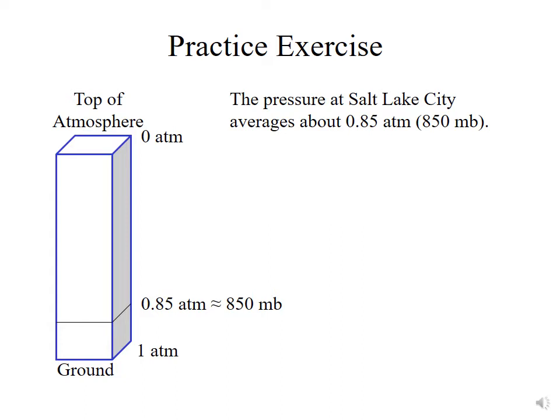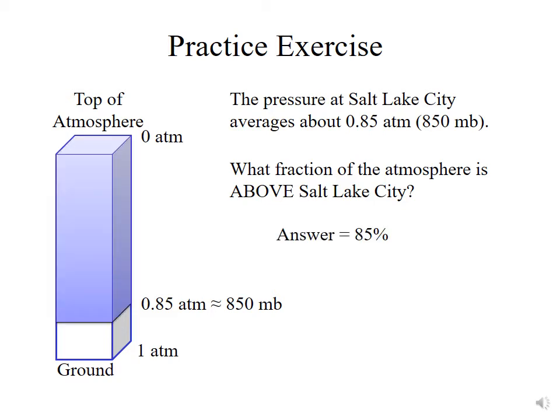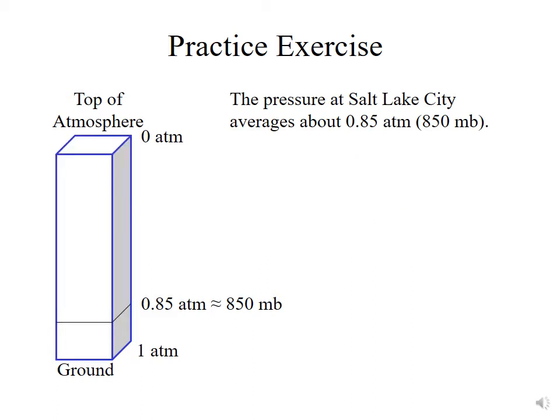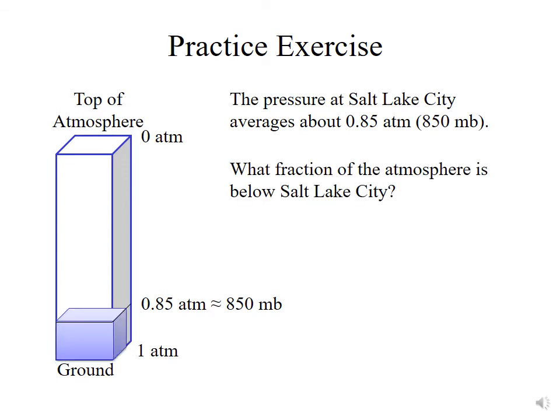The pressure at Salt Lake City averages about 0.85 atmospheres, which is 850 millibars, or 85 kilopascals. So what fraction of the atmosphere is above Salt Lake? You can see visually on the left that it's actually going to be 85% of the atmosphere is above Salt Lake City. And in contrast, what fraction of the atmosphere is below Salt Lake City? That's your 15% is below.